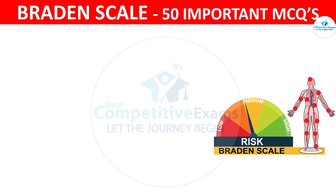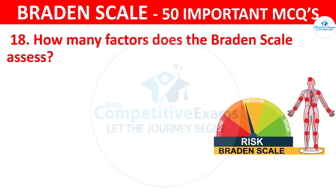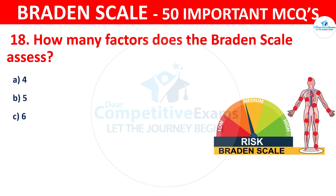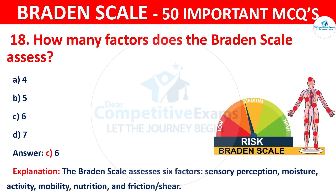Question number eighteen: How many factors does the Braden scale assess? Your options are four, five, six, or seven. The correct answer is C — six. The Braden scale assesses six factors: sensory perception, moisture, activity, mobility, nutrition, and friction and shear.